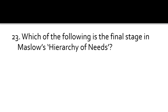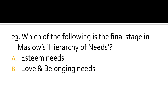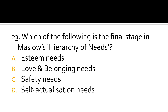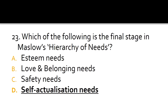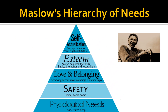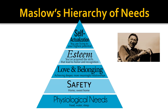Question 23. Which of the following is the final stage in Maslow's hierarchy of needs: esteem needs, love and belonging needs, safety needs, or self-actualization needs? The correct answer is D: self-actualization needs. This figure shows the hierarchy starting from the most basic physiological needs and going up to self-actualization needs at the top.